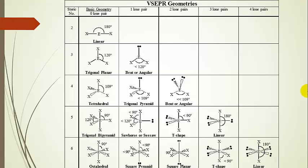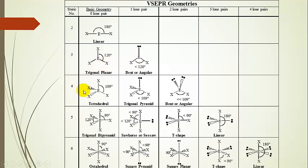Here's our table of VSEPR geometries. All of our basic geometries are in the first column, and we're going to talk about steric numbers two through four. There's only one possibility for steric number two. As the steric number increases, we have more and more possible geometries — two different geometries for steric number three, and three for steric number four.